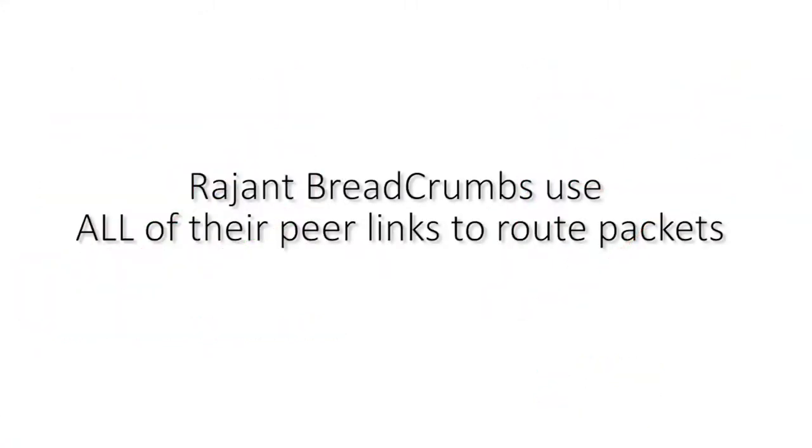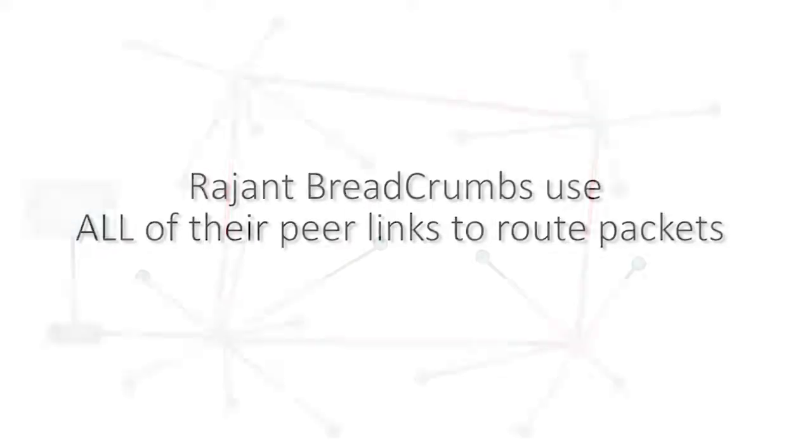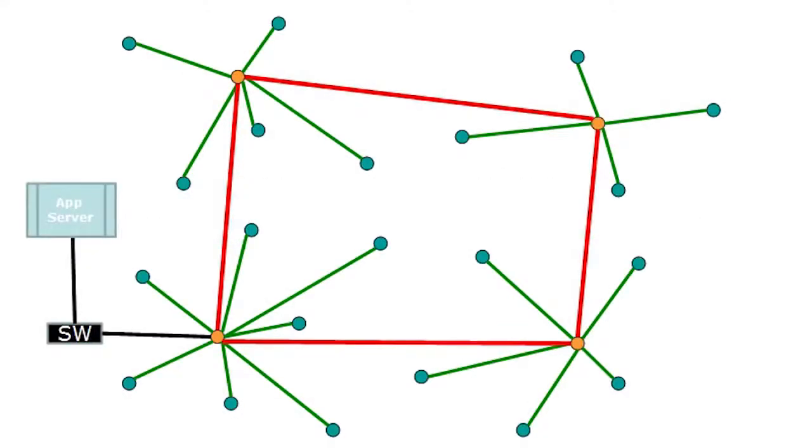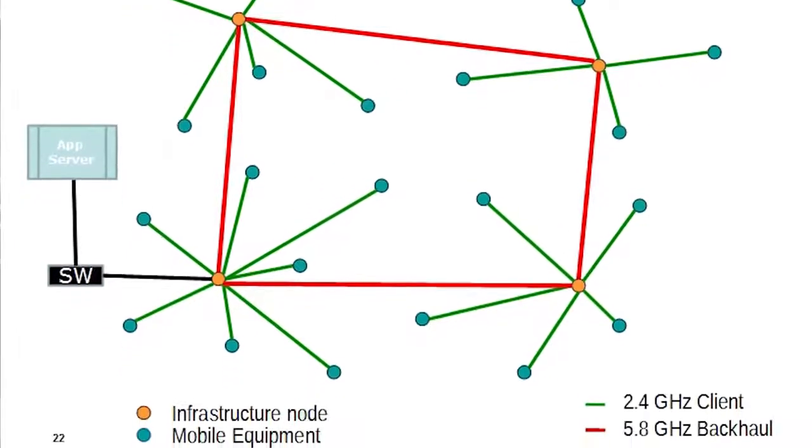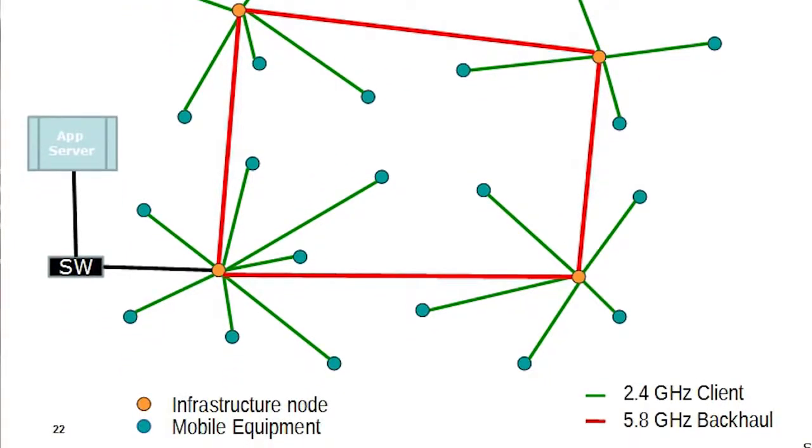Breadcrumbs use all of their radios for all purposes, and they use all of their peer links to route packets. If you take a look at this network diagram, this represents a traditional wireless network. This is not a Rajant kinetic mesh network. In a traditional wireless network, you have two kinds of nodes. There's infrastructure nodes, represented by the orange circles in the corners of this diagram, and you have mobile nodes, represented by the blue circles.